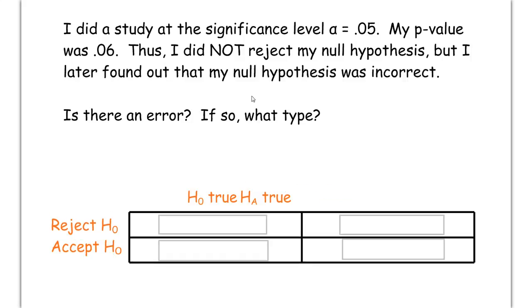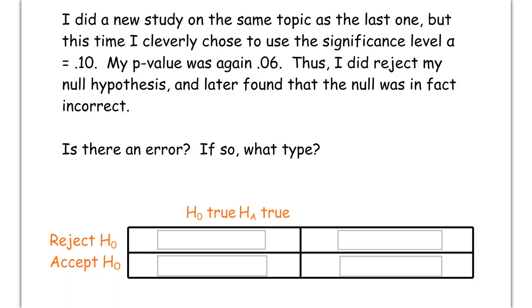Next one, I did a study at significance level alpha is 0.05. My p-value was 0.06. Therefore, you did not reject. But later found out your null was incorrect. So, that means that you did make a mistake. When the null is incorrect, you should be rejecting it. In this case, you did not reject it. That would be a type 2 error. Because the alternative was true. You did not reject.